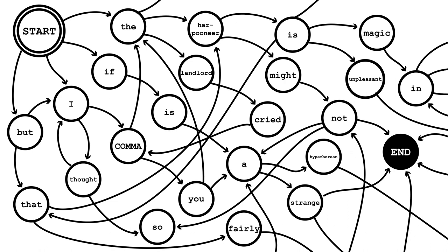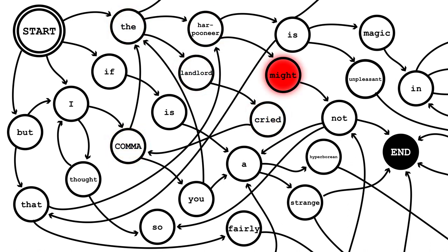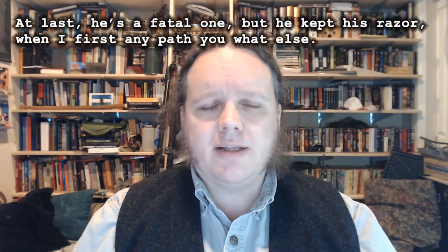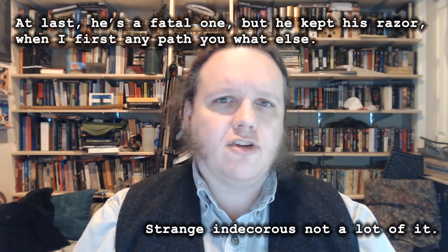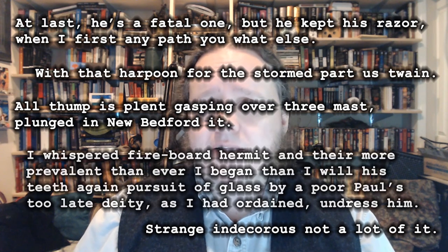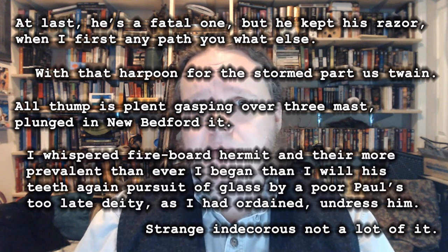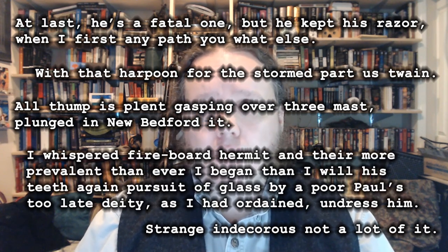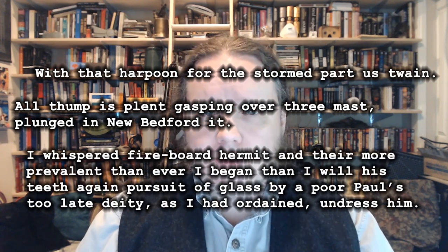To generate a random new sentence, set the machine state to start. Roll the dice and follow the link, outputting each word as you come to each node. When you hit end, print a period and you're done. The results? Well, they're not great by modern neural net standards, but they're pretty fun given how easy it was to put together, and Markov chains have real-world uses too.